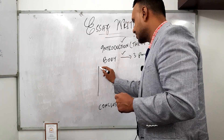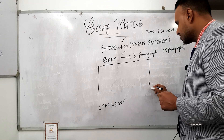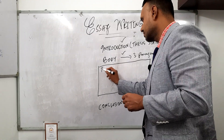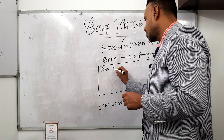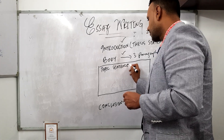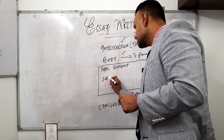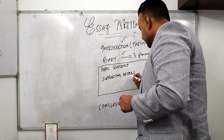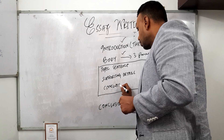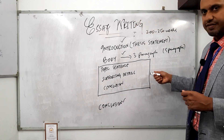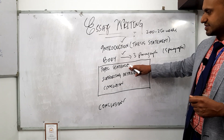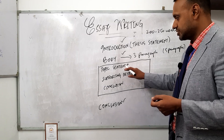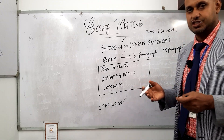When we discuss the body of the essay, we want to understand that a paragraph itself has a structure. Ideally, a paragraph will have a topic sentence — that's the very first thing. Then we have supporting details, and then we have a conclusion. While writing the paragraph, we want to pick a topic sentence which reflects the topic we're going to discuss in that paragraph, then two or three supporting detail lines, and then a conclusion.